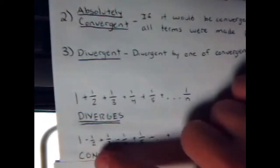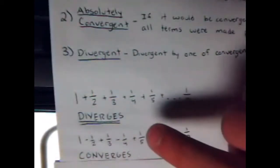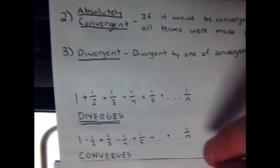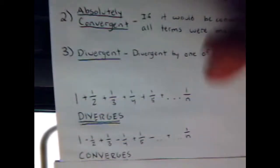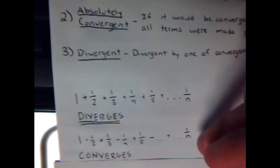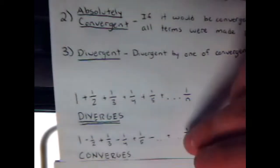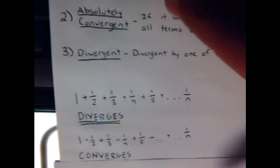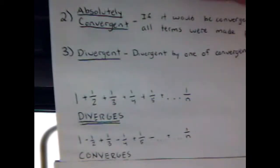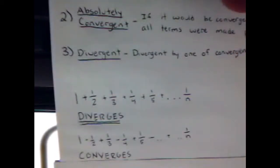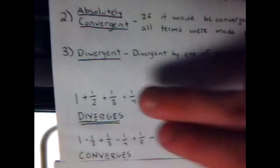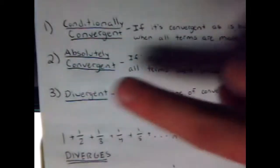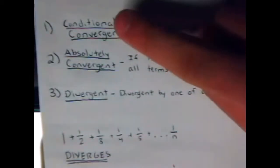If it's alternating — one minus one-half, plus one-third, and it keeps going — then it would converge. So imagine we were given negative one to the n divided by n, an alternating series. We would see that the alternating version does, in fact, converge, but it would diverge if we made all the terms positive, which makes it conditionally convergent.